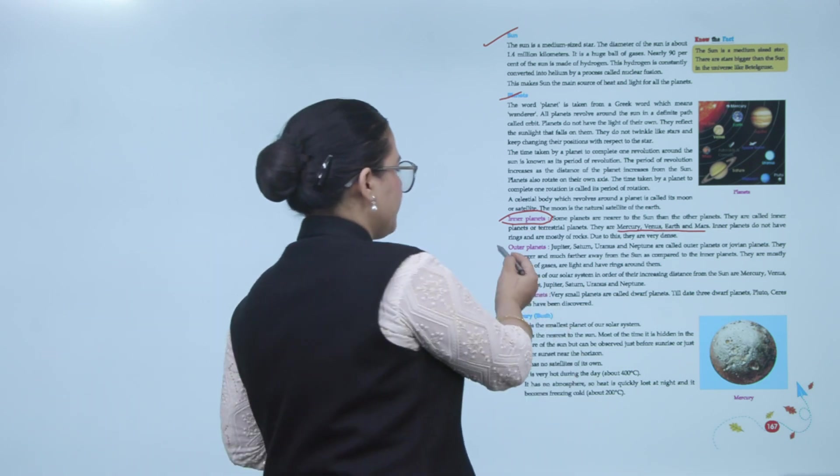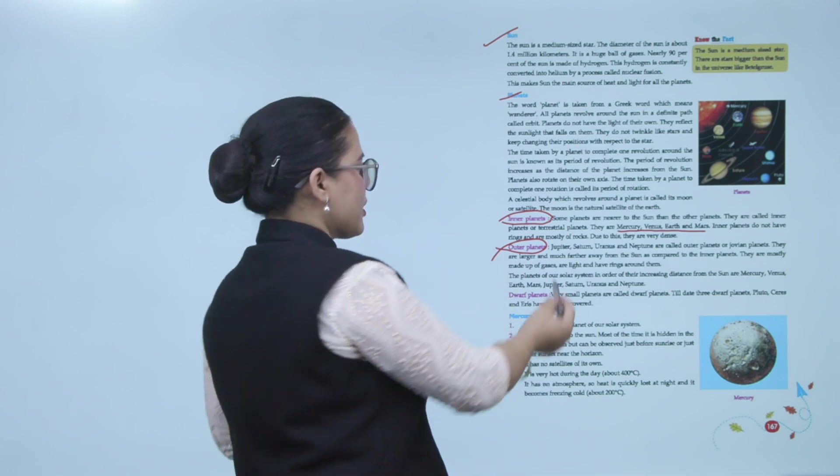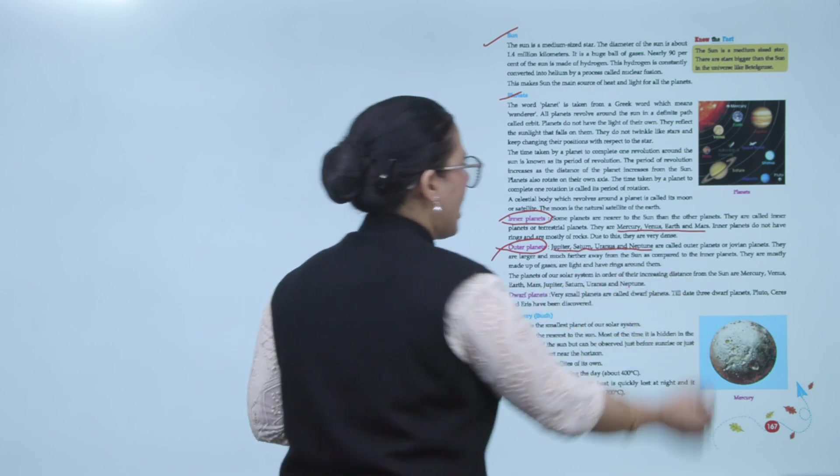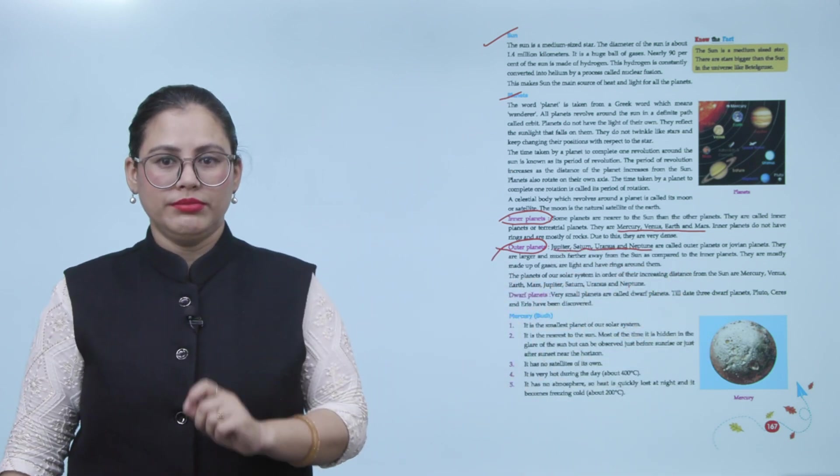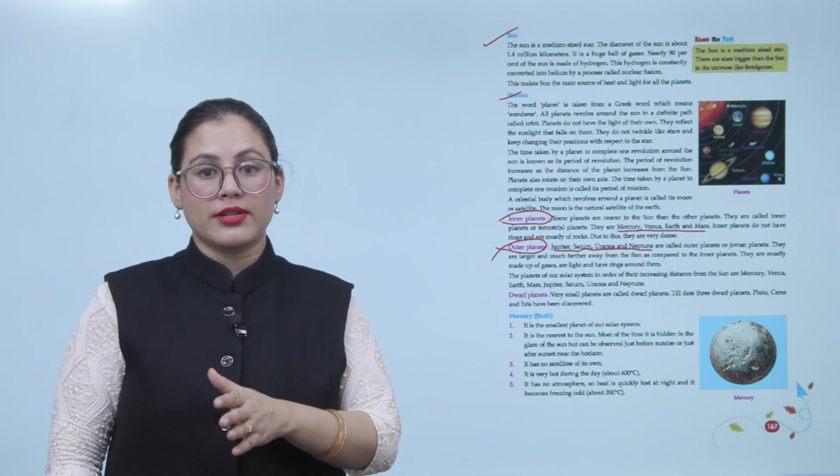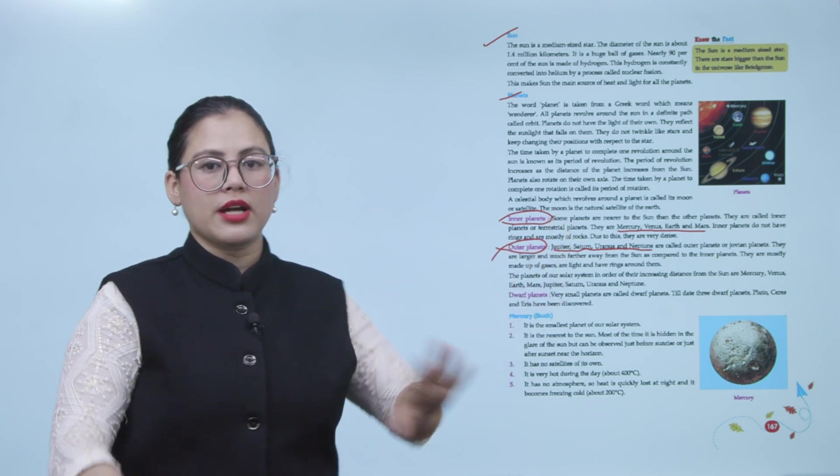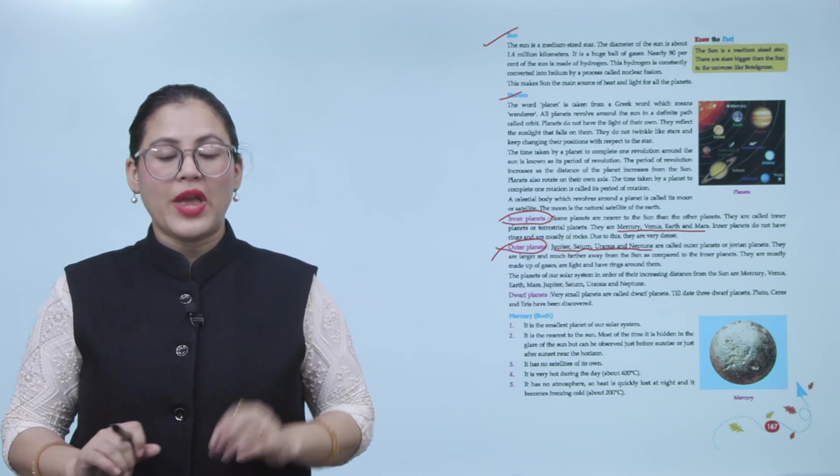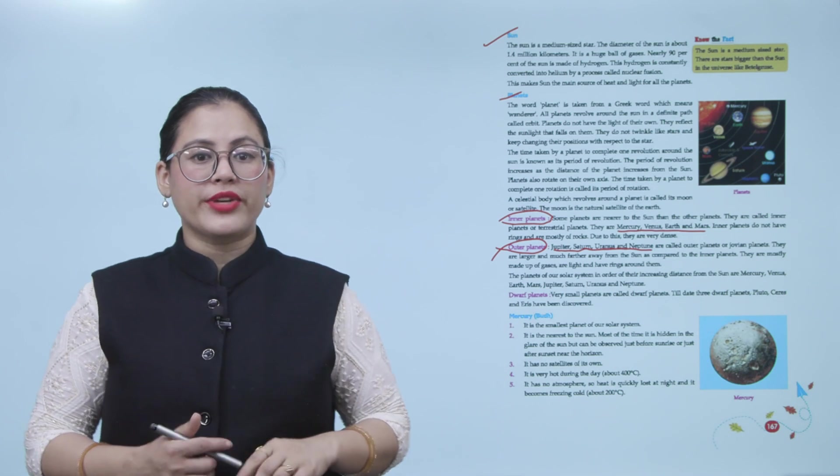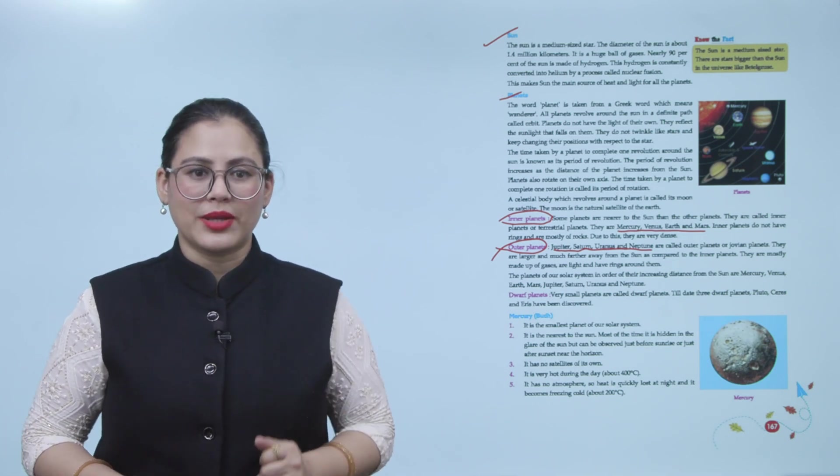Outer planets. Jupiter, Saturn, Uranus, and Neptune are called outer planets or Jovian planets. They are larger and much farther away from the sun as compared to inner planets. Comparatively, outer planets are so big and they are so far, and they are mostly made up of gases, are light, and have rings around them.